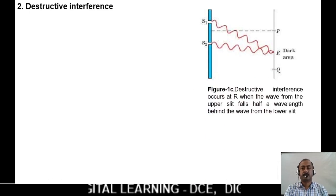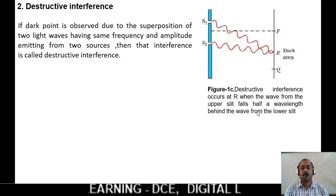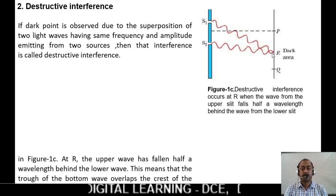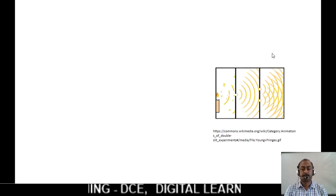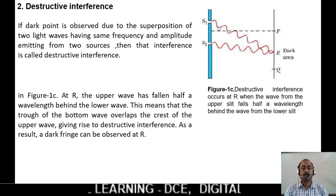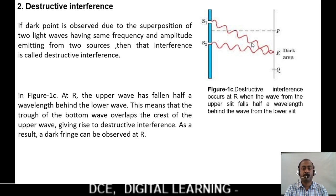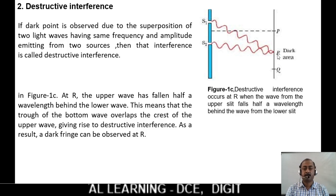For destructive interference due to superposition of linear waves: if a dark point is observed due to the superposition of two light waves having the same frequency and amplitude emitting from two sources, then that interference is known as destructive interference. From figure 1c, the upper wave from S1 has fallen half a wavelength behind the lower wave. This means the trough of the bottom wave overlaps the crest of the upper wave, giving rise to destructive interference. As a result, a dark fringe is observed at point R.